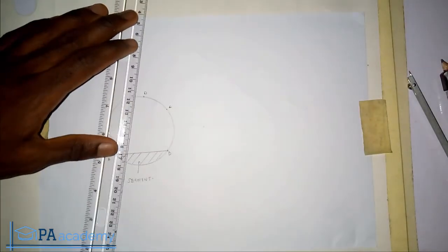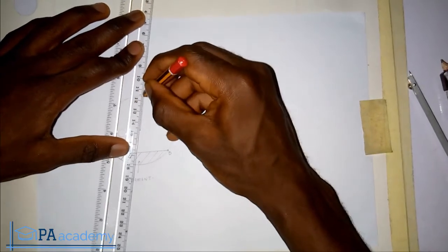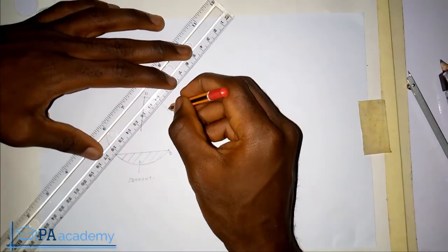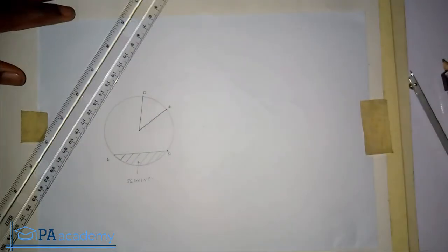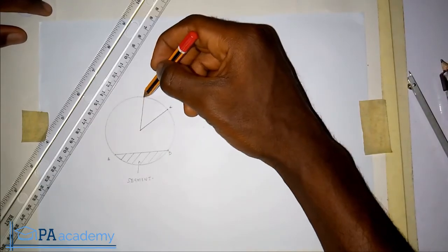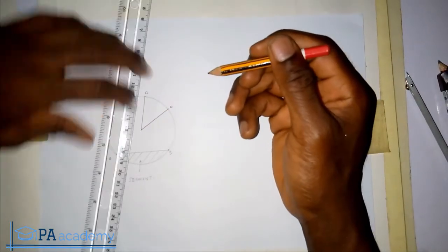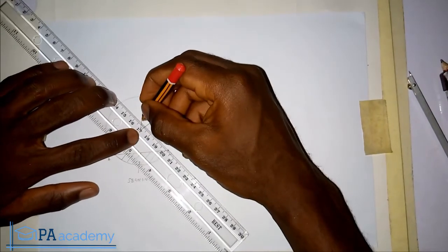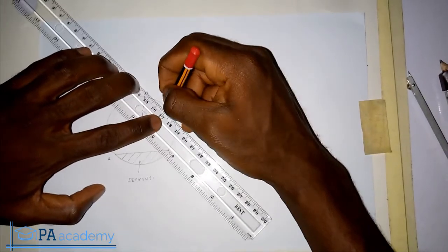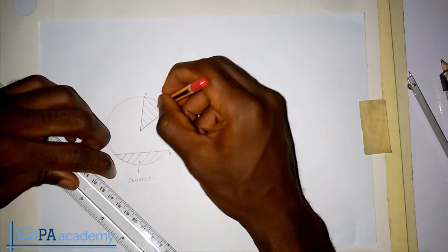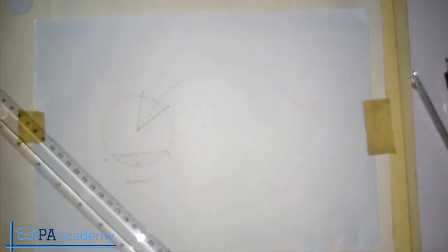Radii is the plural of radius. From point C, I draw a line to the center of the circle — that gives us the first radius. Then I draw the second radius from point D to the center. Now I have an arc from point C to point D and two radii. This particular section that I'm shading is what we call a sector of a circle.